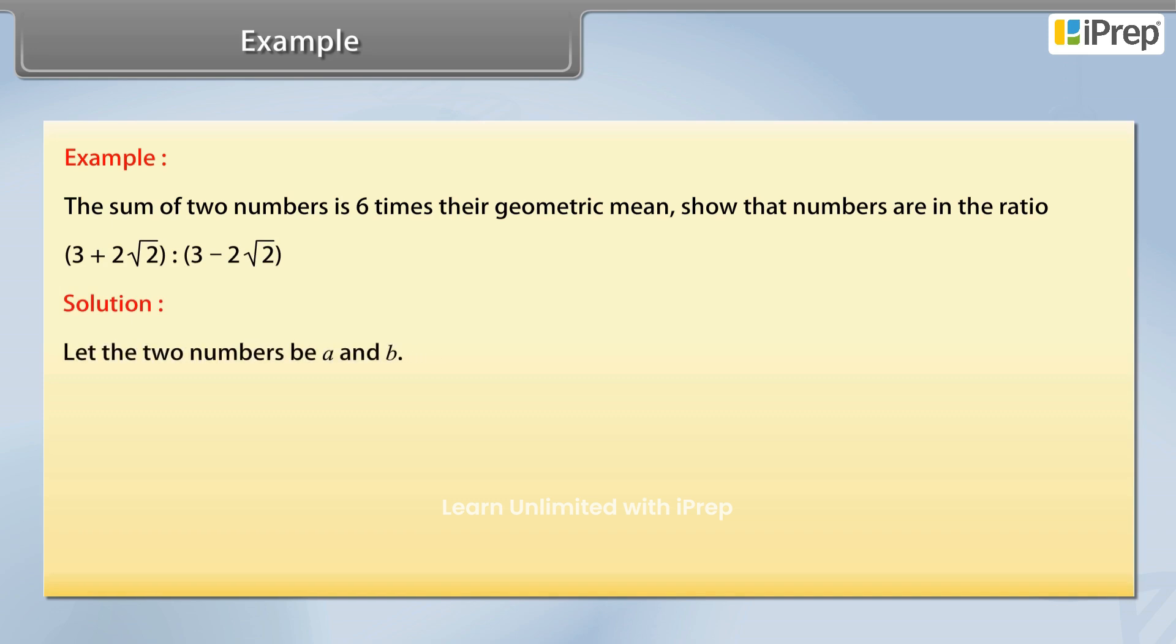Solution: Let the two numbers be a and b. The geometric mean equals square root of ab.